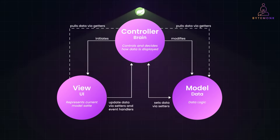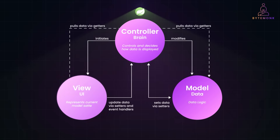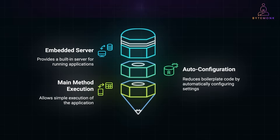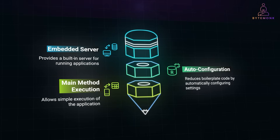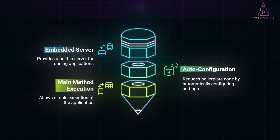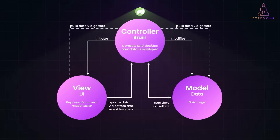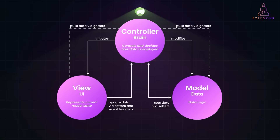Spring MVC is the part of the Spring ecosystem that helps you build web applications following the Model-View-Controller pattern, mapping URLs to controllers, handling requests, and returning views or JSON responses. Spring Boot, on the other hand, is a toolkit that makes starting and configuring your Spring projects incredibly easy — it bundles an embedded server, applies auto-configuration to cut out boilerplate, and lets you run your app just by calling main. You can use Spring MVC with or without Spring Boot, but when you combine the two you get a streamlined, ready-to-run web framework with no additional server setup or hefty XML config required. That's how Spring Boot and Spring MVC help you hit the ground running.